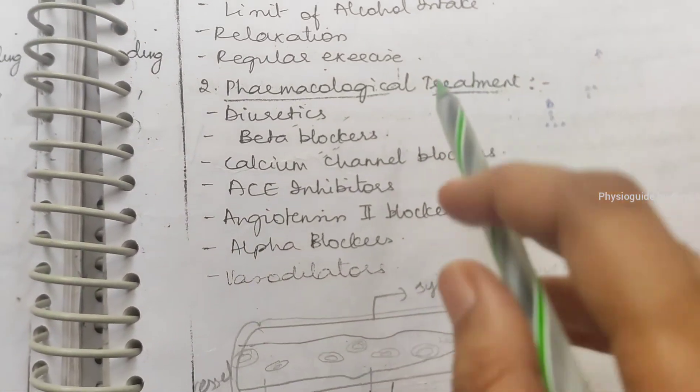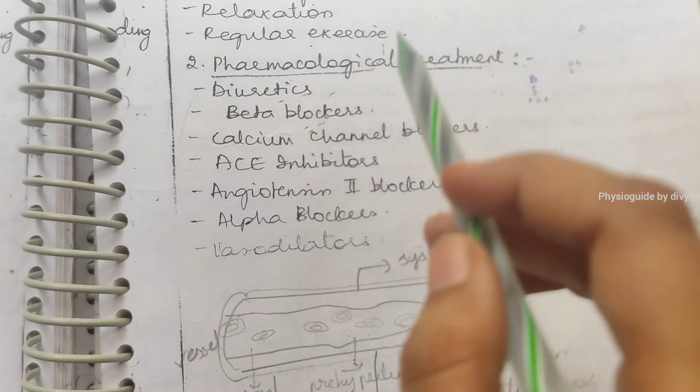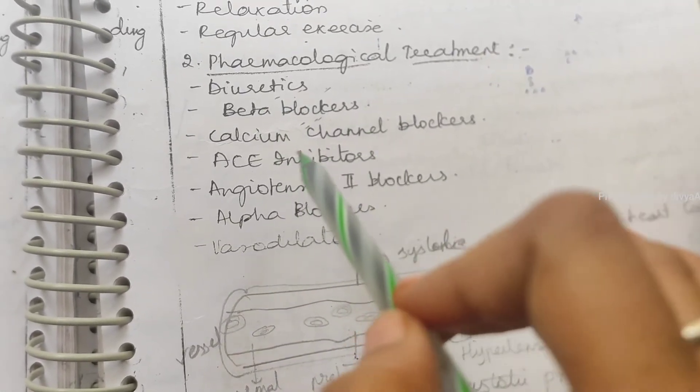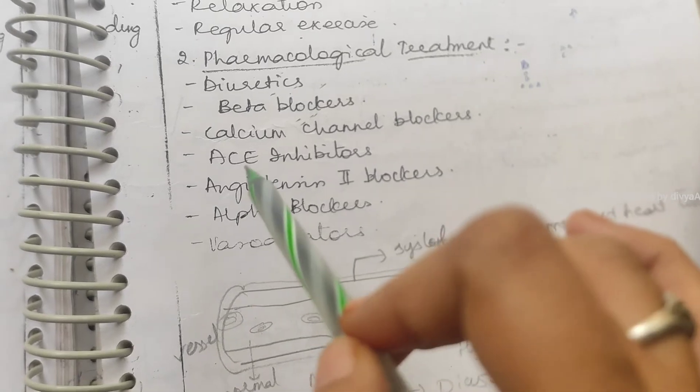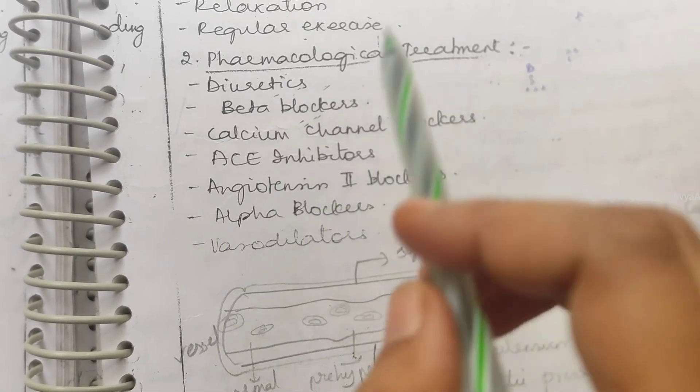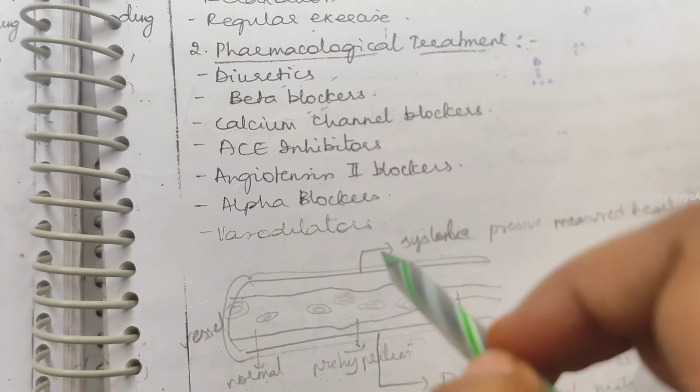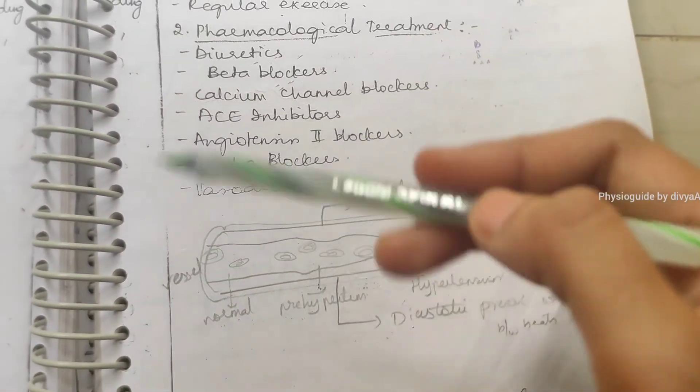Pharmacological treatment: what are the medicines we need to give? Diuretics, beta blockers, calcium channel blockers, ACE inhibitors, angiotensin II blockers, alpha blockers, and vasodilators. These are the drugs we need to give.